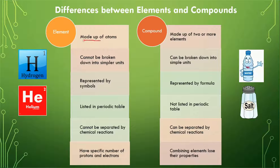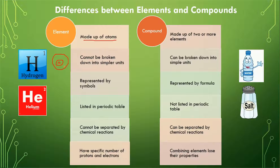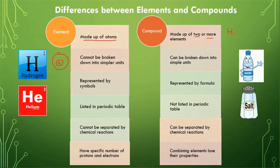Elements are made up of atoms. As I mentioned in my previous lesson, an atom has a nucleus with protons and neutrons inside, while electrons revolve in the orbit. So elements are made up of atoms. In the case of compounds, two or more elements combine to form a compound — for example, water is formed by combining hydrogen and oxygen.